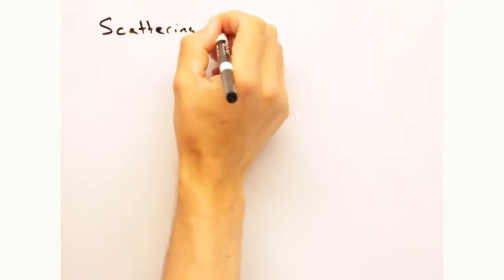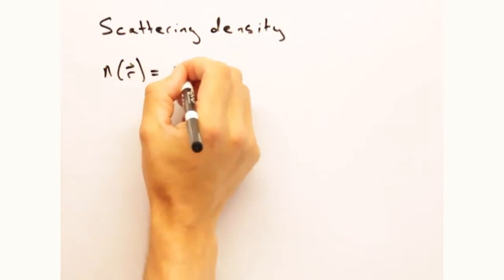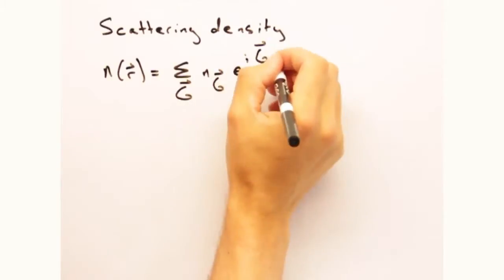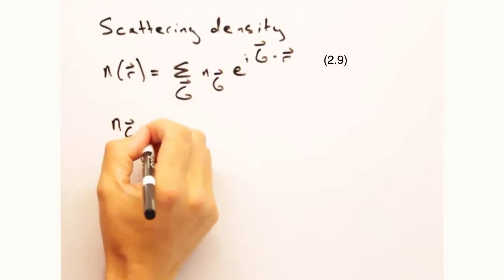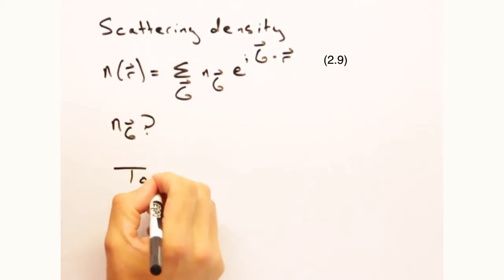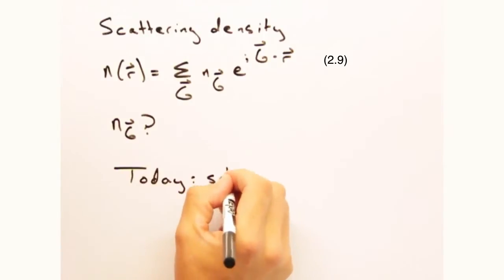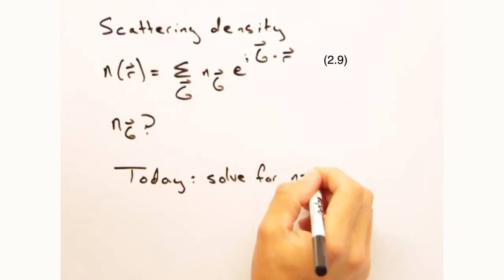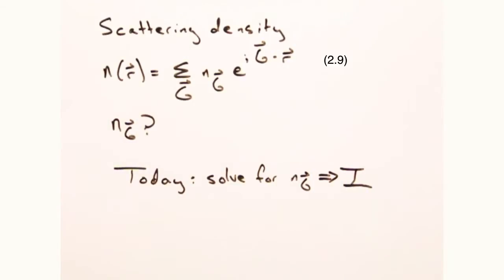So last time we built up an expression for our scattering density n(r) assuming something infinitely periodic, but we didn't really cover how to solve for the Fourier coefficients. So today the goal is to dive into one method for solving for these coefficients and thus finally being able to develop an expression for the intensity we've been promising you for a while now.